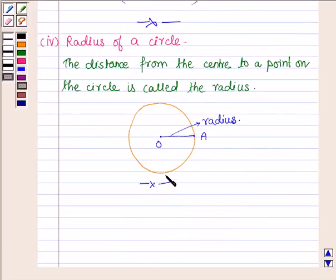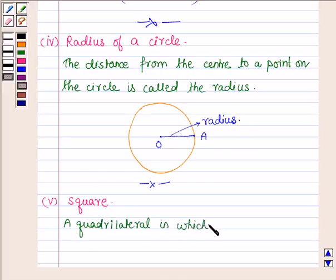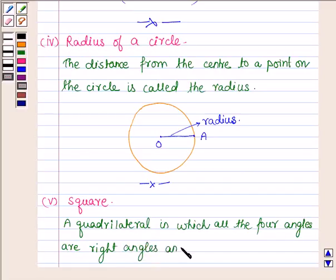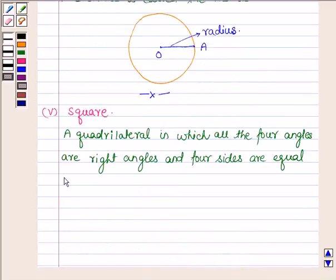So this completes the fourth part, proceeding on to the last part where we have to define a square. A quadrilateral in which all the four angles are right angles and four sides are equal is called a square.